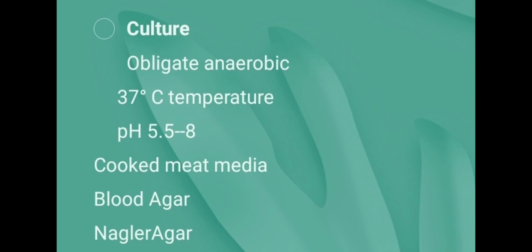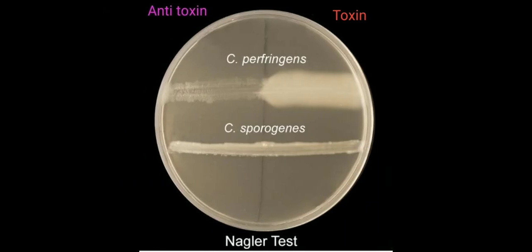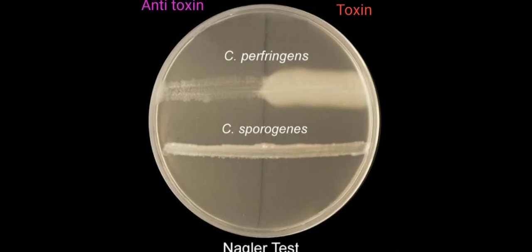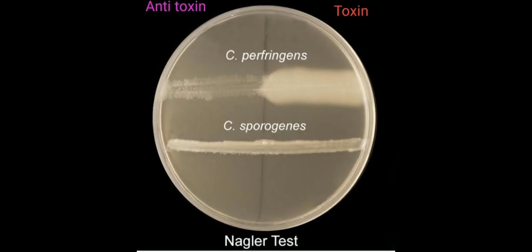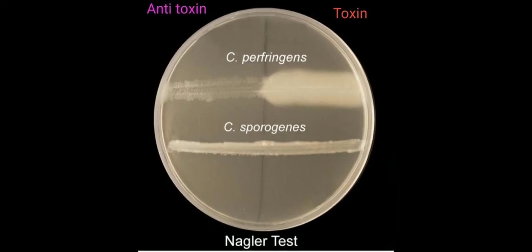Cooked meat media is used as an enrichment media for the growth of Clostridium perfringens. On blood agar, Clostridium perfringens grows anaerobically. Nagler agar plates, containing 5 to 10% egg yolk, are used to identify strains that produce lecithinase. Lecithinase interacts with the lipids in egg yolk to produce a characteristic precipitate around the colonies — the Nagler reaction. One half of the plate is inoculated with antitoxin to act as a control in the identification.